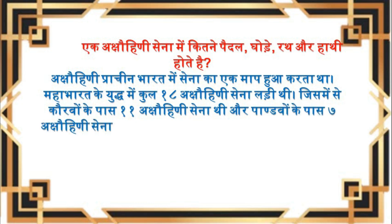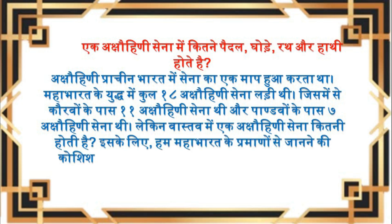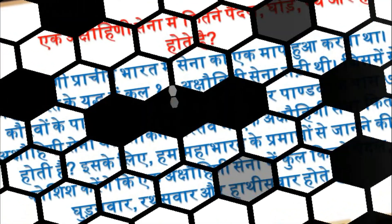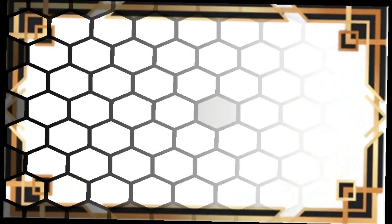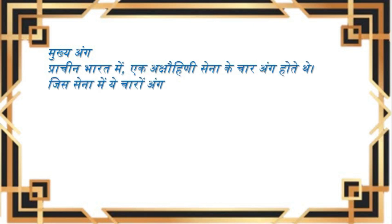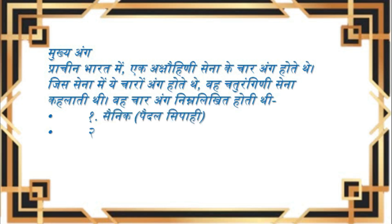वास्तव में एक अक्षोहिनी सेना कितनी होती है? इसके लिए हम महाभारत के प्रमाणों से जानने की कोशिश करेंगे कि एक अक्षोहिनी सेना में कुल कितने पैदल, घुड़सवार, रथसवार और हाथीसवार होते हैं। प्राचीन भारत में एक अक्षोहिनी सेना के चार अंग होते थे। जिस सेना में ये चारों अंग होते थे, वह चतुरंगिणी सेना कहलाती थी। वे चार अंग: पैदल सिपाही, घोड़ासवार, गज (हाथी) सवार, और रथसवार।